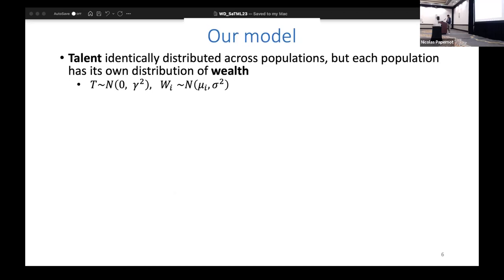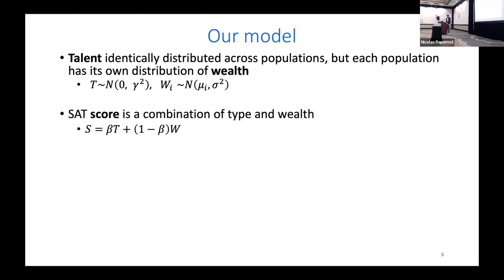You have talent which is identically distributed across populations, but wealth actually depends on which population you are in. Specifically, the μᵢ, the mean for that Gaussian, is different. The SAT score is a combination of your type and wealth, captured by β where β is in [0,1].